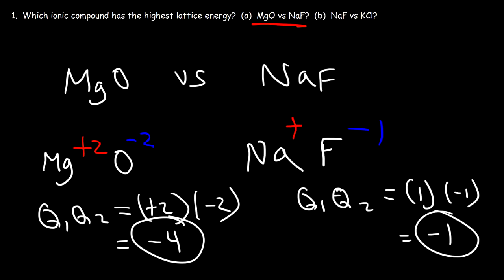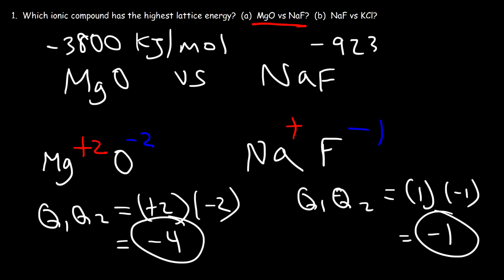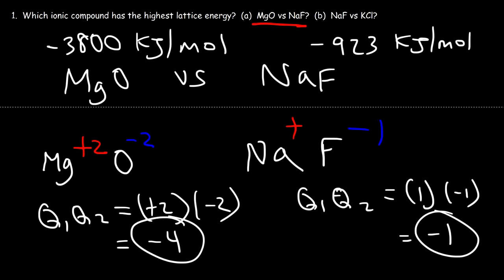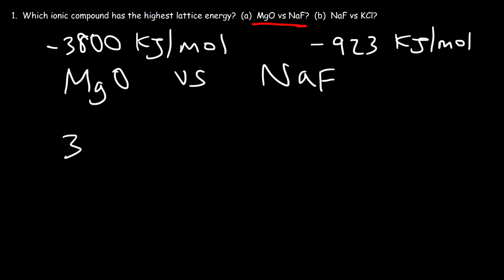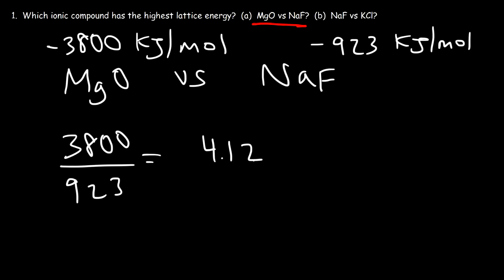The magnesium oxide lattice energy value is -3,800 kJ/mol, and for sodium fluoride it's about -923 kJ/mol. If we divide 3,800 by 923, we get 4.12, so the lattice energy of magnesium oxide is more than four times greater than sodium fluoride.